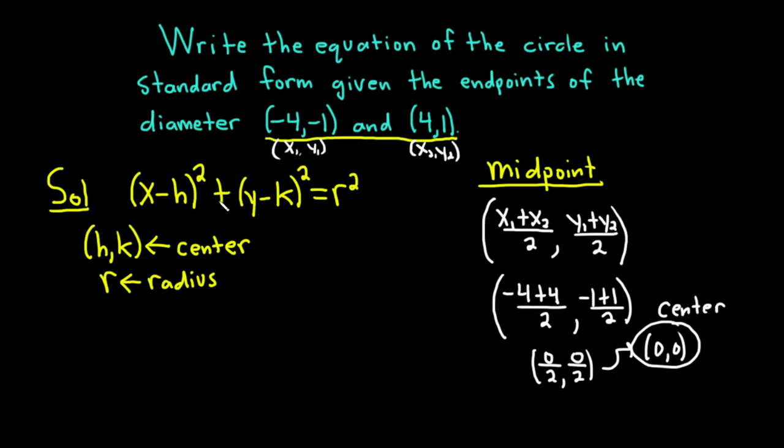Now that we have the center, we can just plug it in. We'll get (x - 0)² + (y - 0)² = r². x - 0 is x, so we just get x², and y - 0 is y, so we get y². This gives us x² + y² = r².